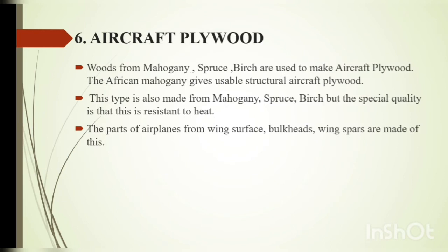Aircraft plywood. Woods from mahogany, spruce, etc. are used to make aircraft plywood. African mahogany gives usable structural aircraft plywood. It is mainly used to make wing surfaces, bulkheads, wing spars, etc.